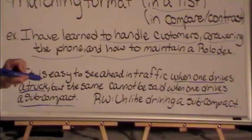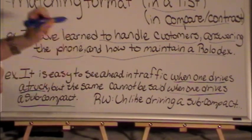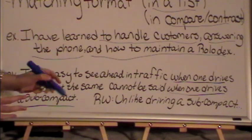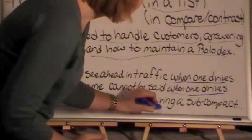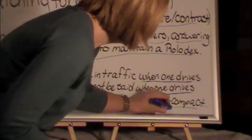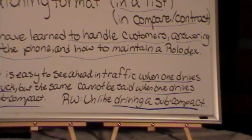See that? Okay, good. Now, in the rewriting section, it says, rewrite your sentence beginning with, unlike driving a subcompact. Oops, draw that line there. There you go. Driving a subcompact.